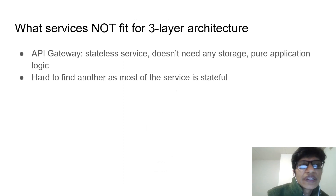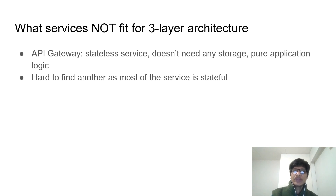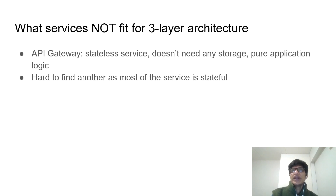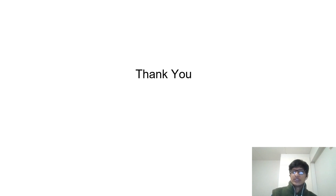Regarding services that do not fit the three-tier architecture, the API gateway is one example, because it is a stateless service and does not need storage, so it does not follow the three-tier pattern. Most other services are in the three-tier architecture pattern. Those are the reviews we have made on our updated diagrams according to the knowledge we have gained. Thank you for listening.